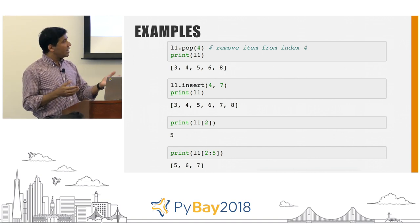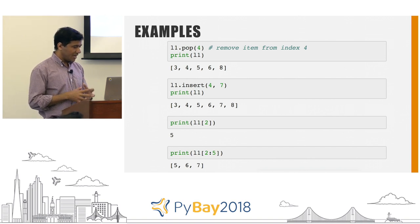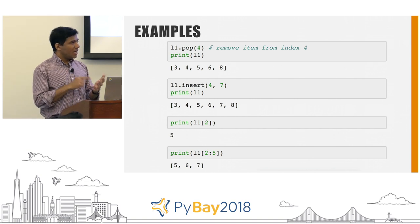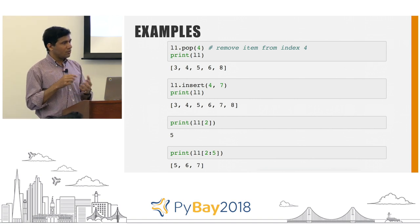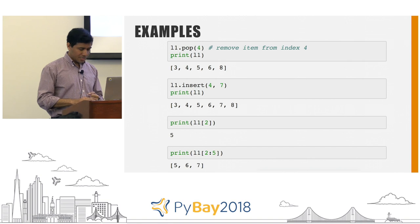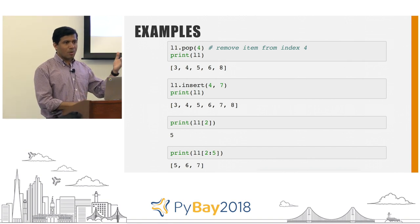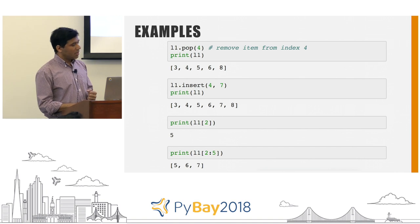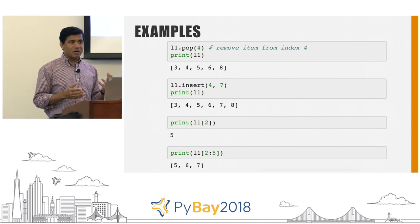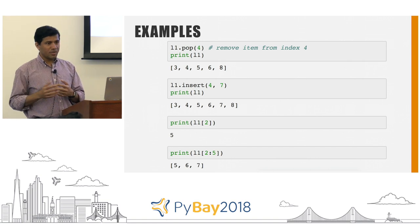You can also do indexing: L1[2] gives you the element at the second index. Or you can say L1[2:5], which means getting elements from index 2 all the way to index 4 — indices 2, 3, and 4 — returned as a list. This operation is called slicing. These are the most basic operations you do on a list.